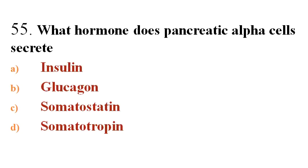Next question: What hormone do pancreatic alpha cells secrete? Options A. Insulin, B. Glucagon, C. Somatostatin, D. Somatotropin.